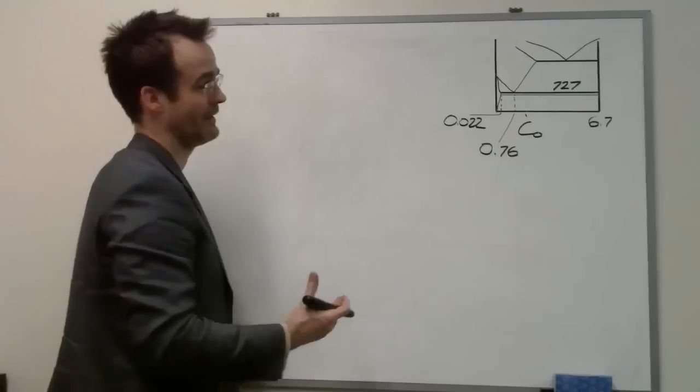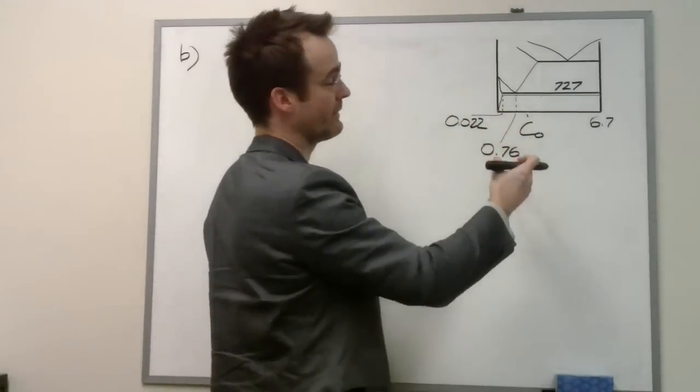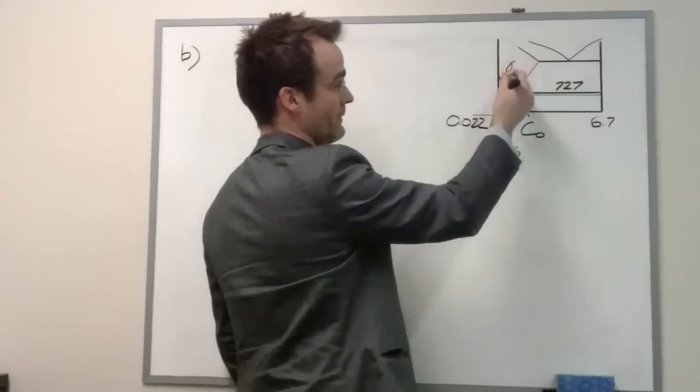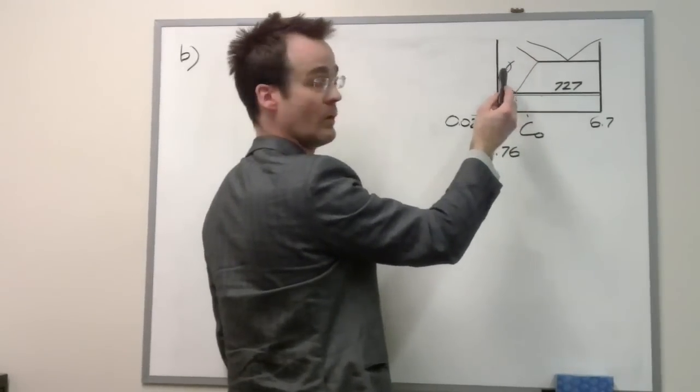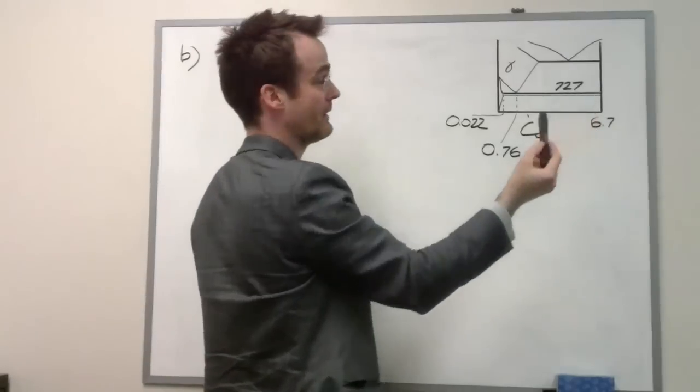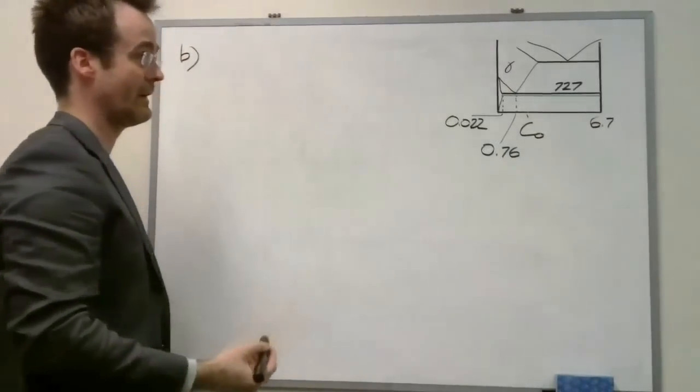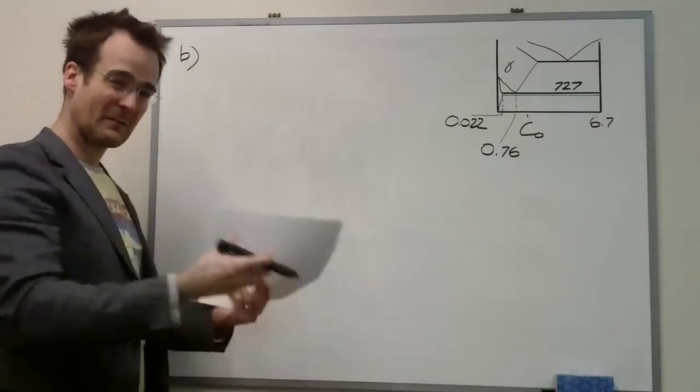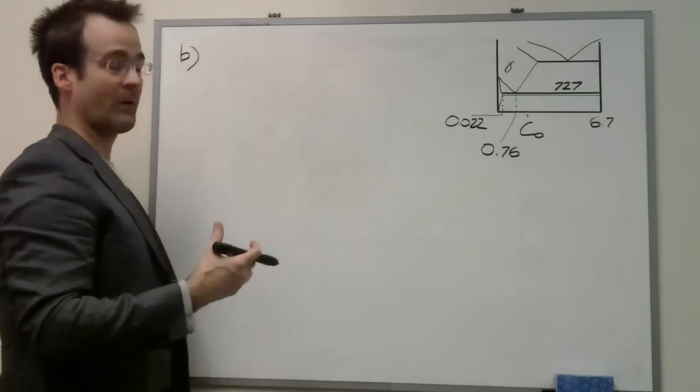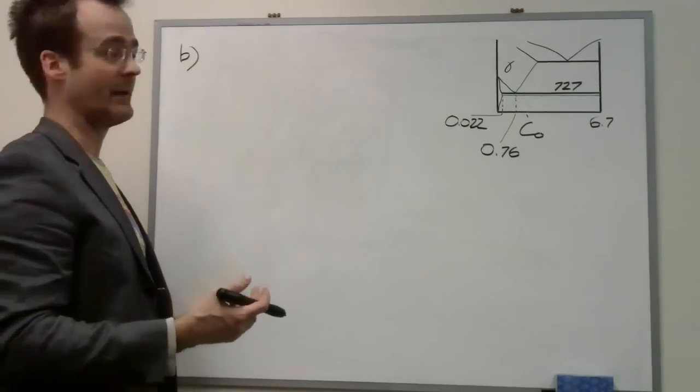Question B asks if a sample of perlite—and remember, perlite is what forms when we cool austenite and it transforms to alpha plus cementite—so if we had some perlite and we took the perlite out, how much of that perlite would be ferrite?